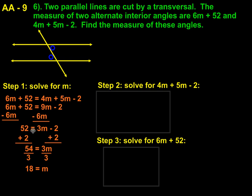That gets 52 equals 3m minus 2. Add 2 to both sides and we get 54 equals 3m. Divide by 3. We determine that m is equal to 18.